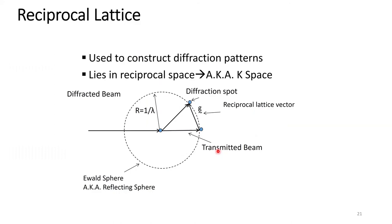The reciprocal lattice is the construct upon which diffraction patterns work. I often debate whether to introduce it during X-ray diffraction or save it for electron diffraction — in most cases I save it for electron diffraction. The reciprocal lattice lies in reciprocal space, also known as K-space. The Ewald sphere is a reflection sphere, and diffraction patterns live on the Ewald sphere. The general radius of the Ewald sphere is 1/λ, and the limiting radius is λ/2.